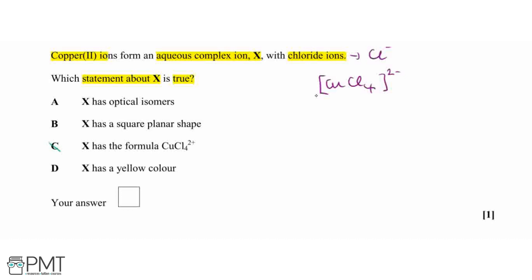And then, as I mentioned, you need to learn that this is actually a tetrahedral shape for this complex. Therefore, our answer can't be B, and because it's tetrahedral and we've got four of the same ligand bonded to our central copper ion metal, we also can't have optical isomers for this complex.